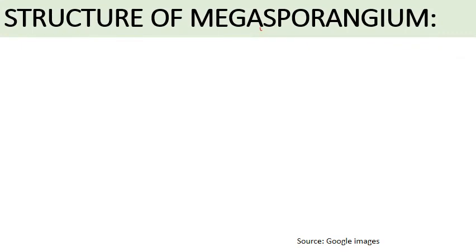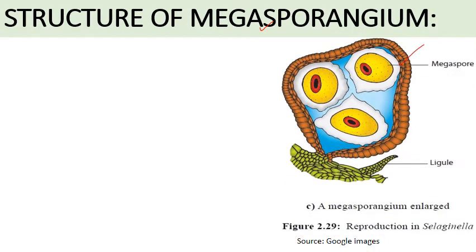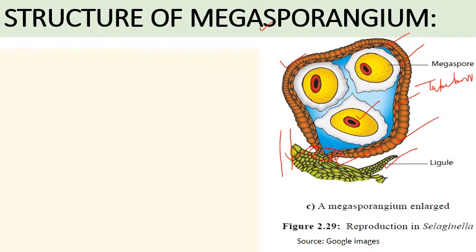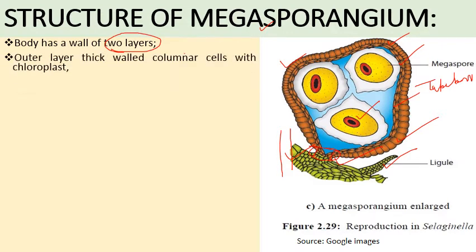The structure of megasporangium is similar to microsporangium. It consists of outer body layers with a thick wall, then inner to this is the nutritive tapetum layer whose function is to provide nutrition to the developing megaspores. It is larger in size compared to microsporangium and commonly has four lobes. Its color is whitish yellow or orange with a short stalk, and it is present in the axil of megasporophyll between the ligule and strobular axis.